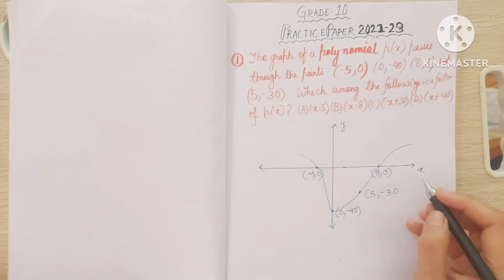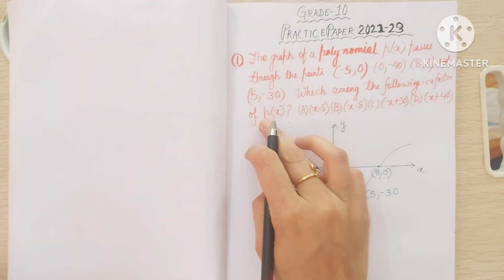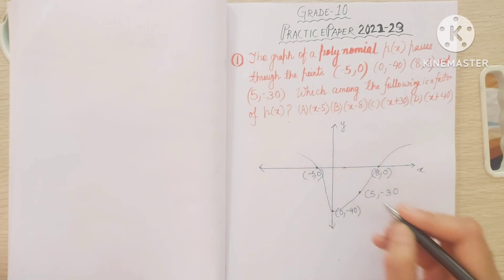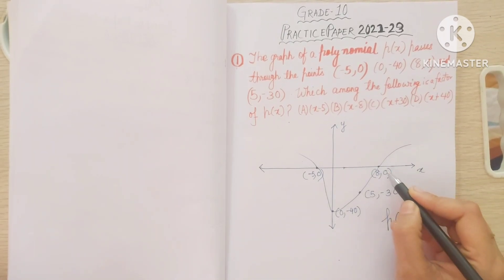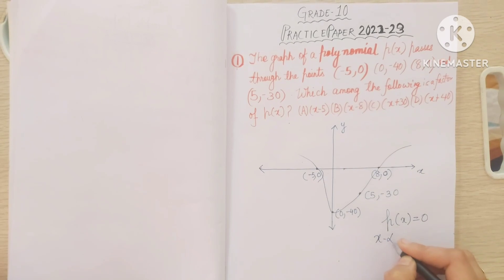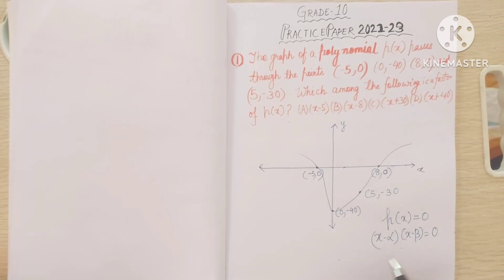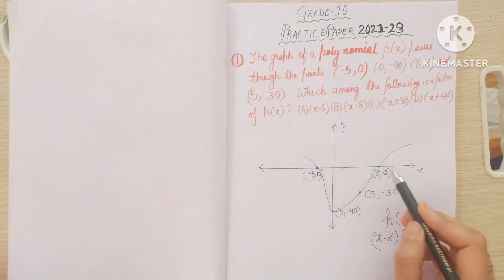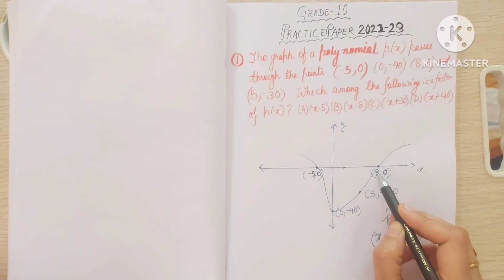Now we have to determine the meaning of what a factor is. The factors correspond to points on the x-axis where the polynomial p(x) equals zero — that is, where y equals zero. This is where x minus alpha or x minus beta gives us zero. So where the graph is cutting the x-axis, because then y is 0. These two x-axis values, minus 5 and 8, are the factors of p(x).